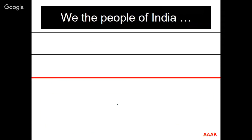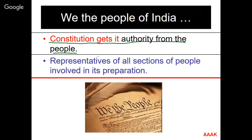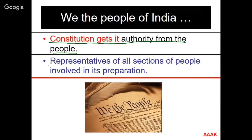Looking at the key terms in the preamble: 'We the people of India' means the constitution gets its authority from the people — not from the United Nations, not from any other body, not from kings or queens. When we say 'we the people of India,' this 'we' represents all sections of the people who were directly or indirectly involved in preparing and framing this constitution.